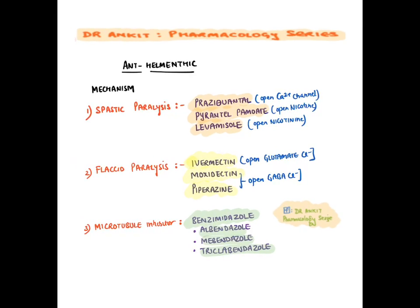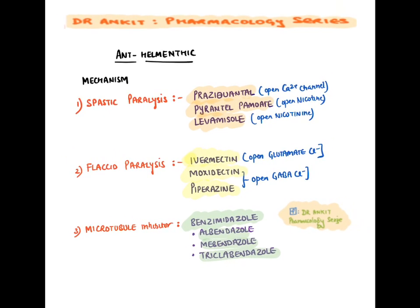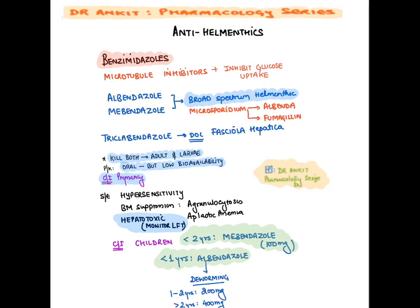Mechanisms of anthelmintic drugs: drugs causing spastic paralysis include praziquantel (opens calcium channels), pyrantel pamoate and levamisole (open nicotinic channels). Drugs causing flaccid paralysis include ivermectin (opens glutamate-gated chloride channels), moxidectin, and piperazine (open GABA-chloride channels). Benzimidazoles (albendazole, mebendazole, triclabendazole) are microtubule inhibitors.